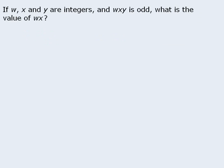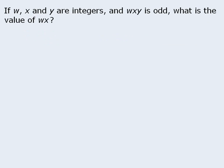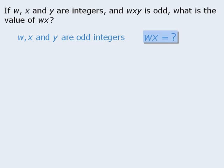Here's another example. We have three integers, their product is odd, and we want to find the value of W times X. For the product of three integers to be odd, it must be the case that each integer is odd. So let's write that. The target question asks us to find the value of W, so we'll write this.